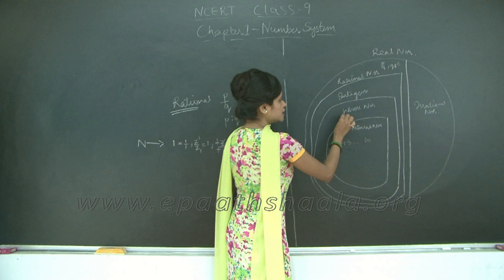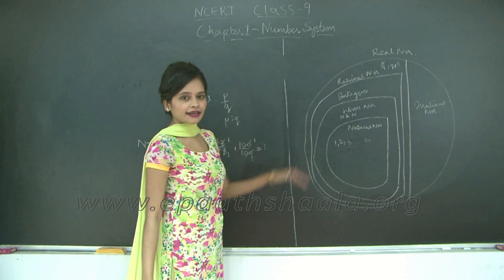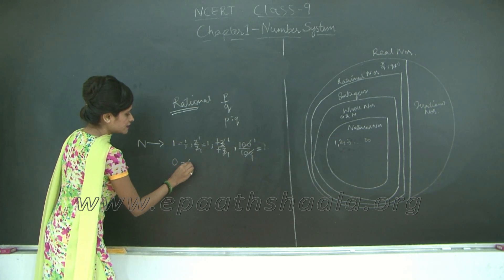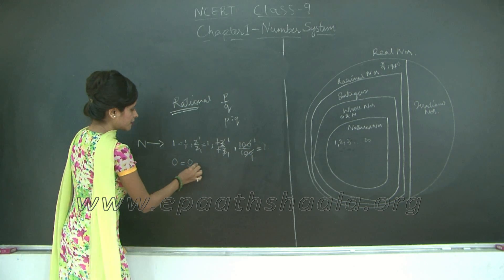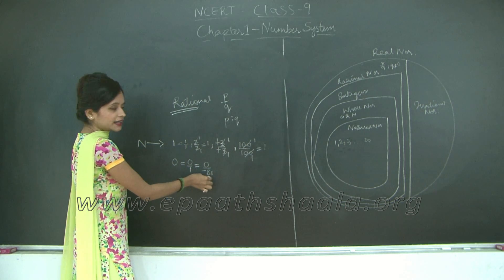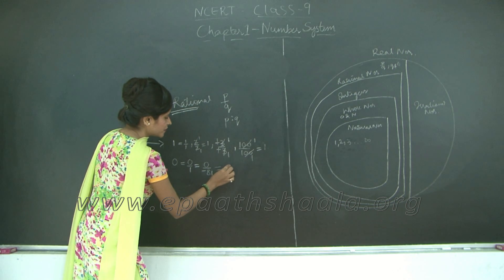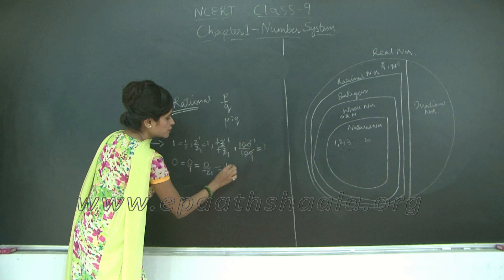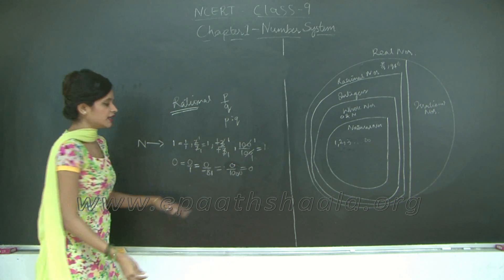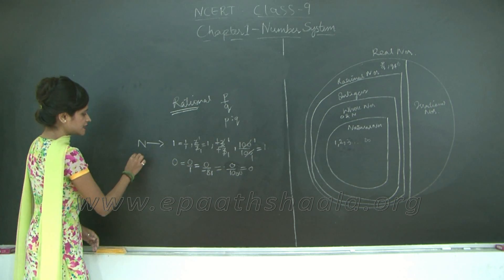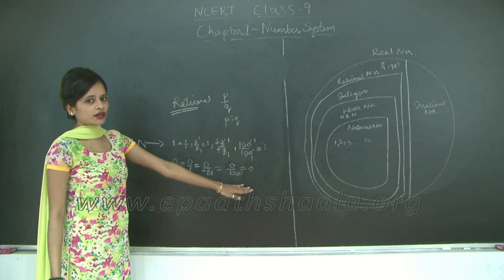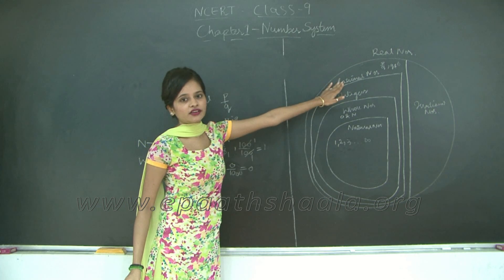Now let's take a look at whole numbers. Whole numbers has 0 and natural numbers. We just took a look at natural numbers, let's take a look at 0. 0 can be represented as 0 upon 1, it can also be represented as 0 upon minus 81, or 0 upon 1000. 0 divided by any number basically is going to give you 0. So again we have represented our whole numbers—0 as well as natural numbers—in the form p upon q where q is not equal to 0. Therefore whole numbers are defined within rational numbers.